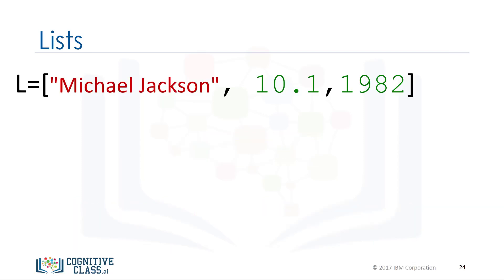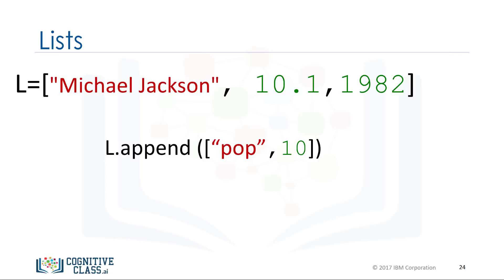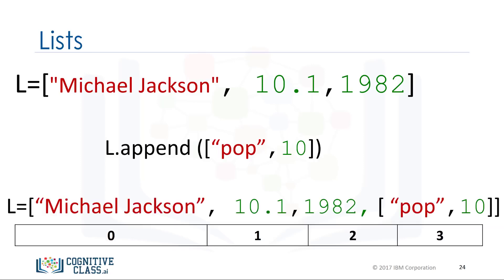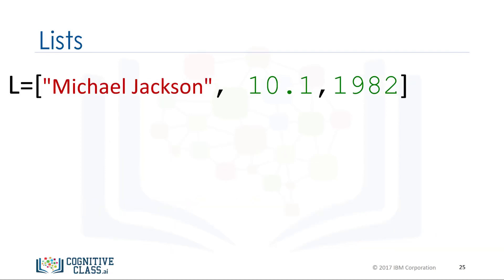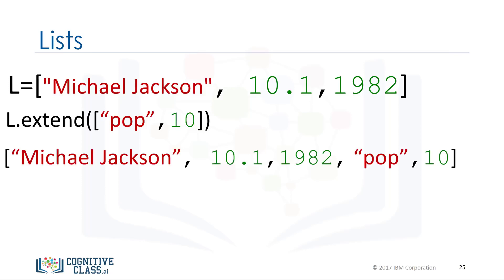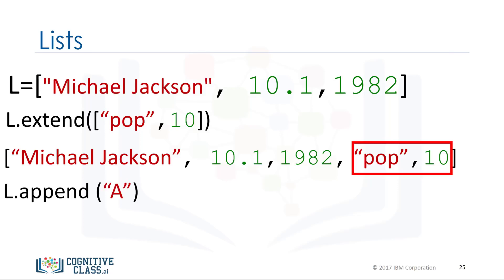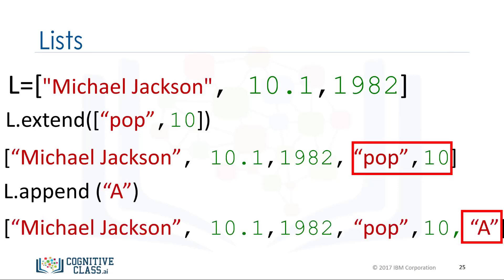Another similar method is append. If we apply append instead of extend, we add one element to the list. Index three contains the list we appended. Every time we apply a method, the list changes. If we apply extend, we add two new elements to the list. If we append the string A, we further change the list by adding the string A.